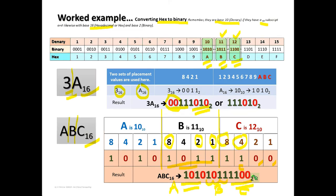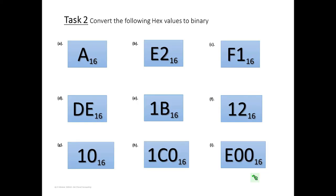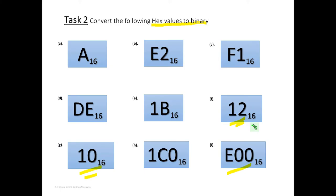Task 2: convert these hexadecimal values to binary. Don't be mistaken when you see '10' — this is not the number ten or one-zero in binary; it is one-zero in hexadecimal. Similarly, E00 is hexadecimal, and 12 here is one-two in hexadecimal, not the number twelve. You can deal with each digit separately or group them. Pause the video and try these.